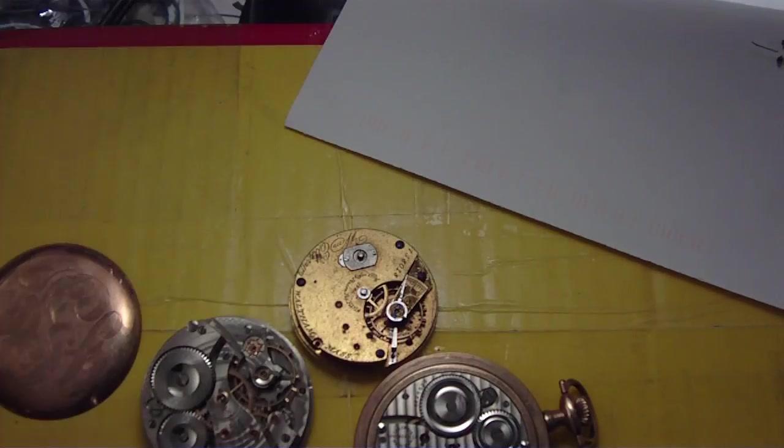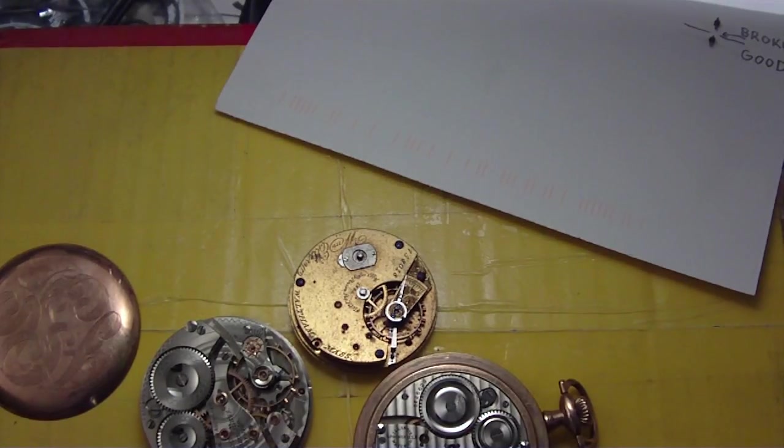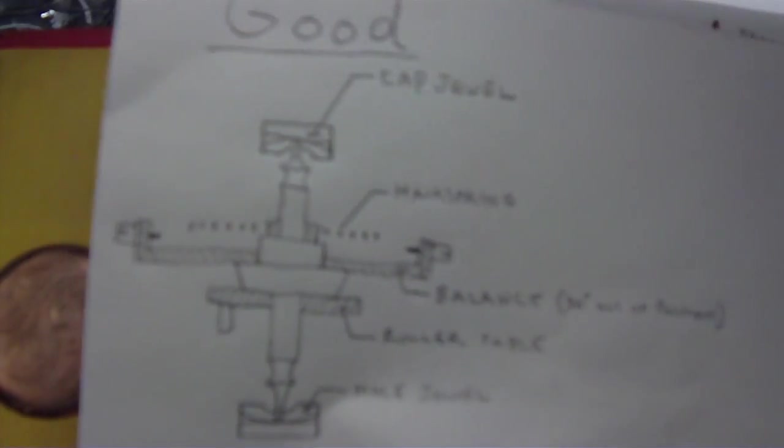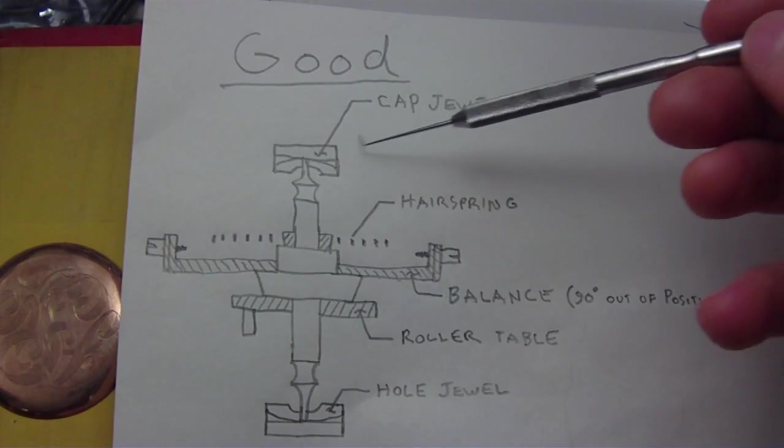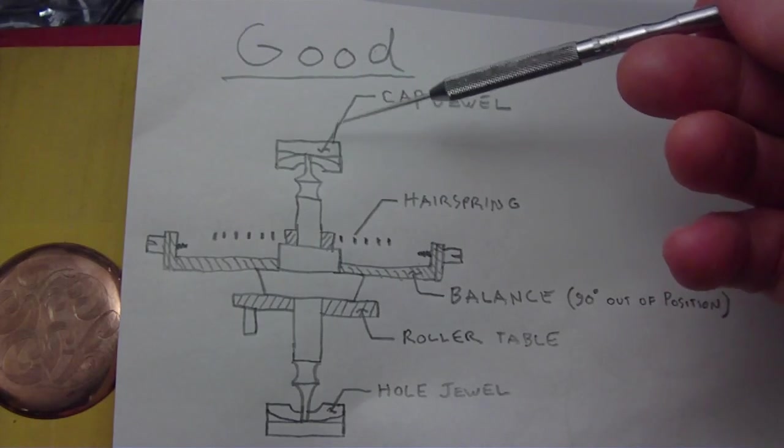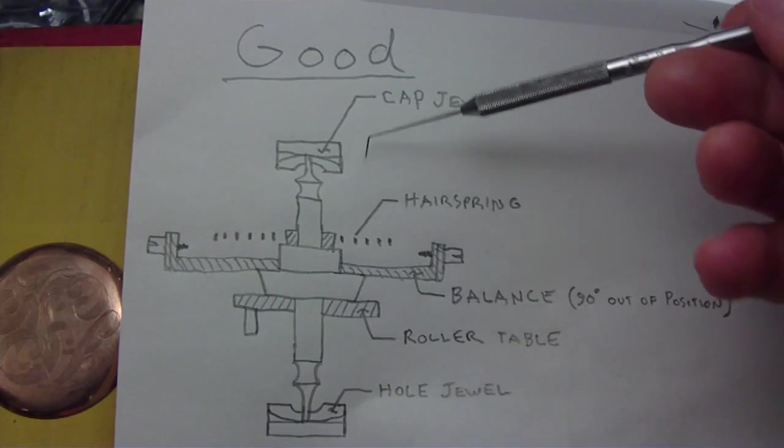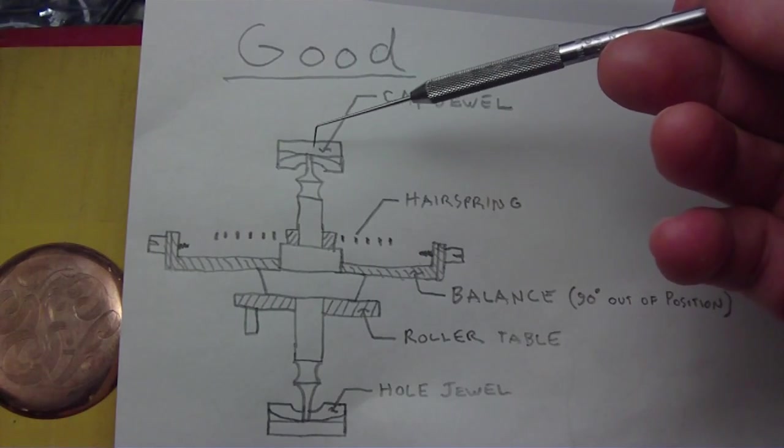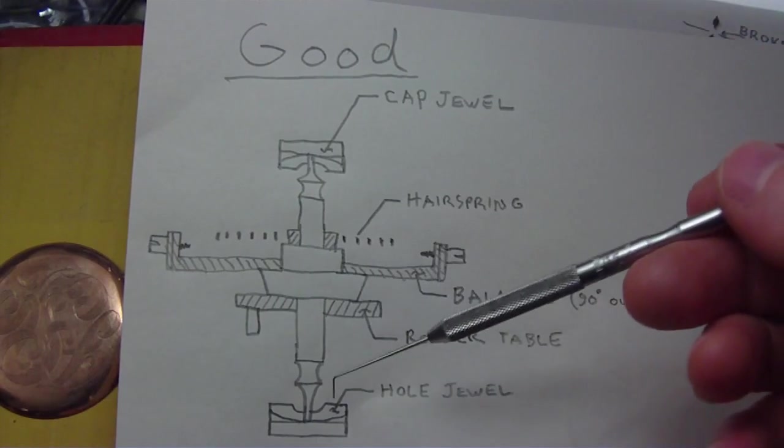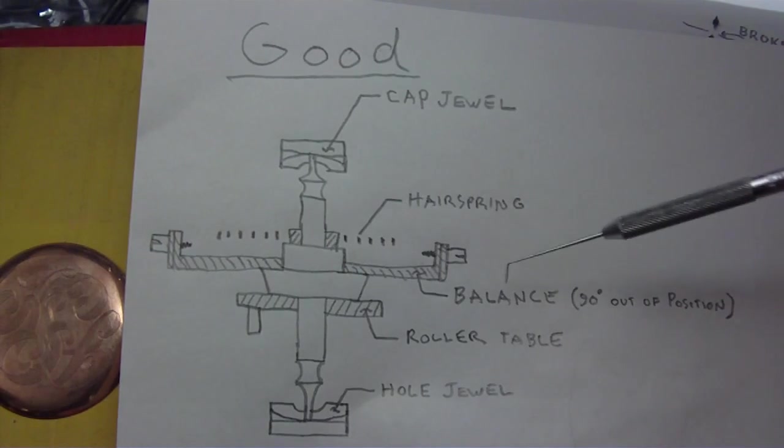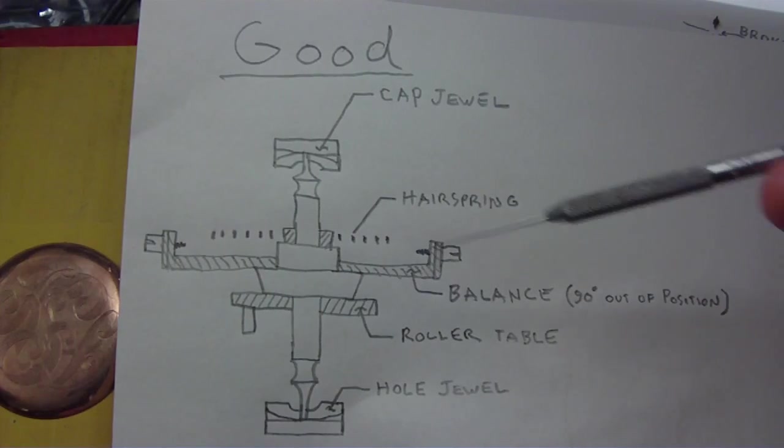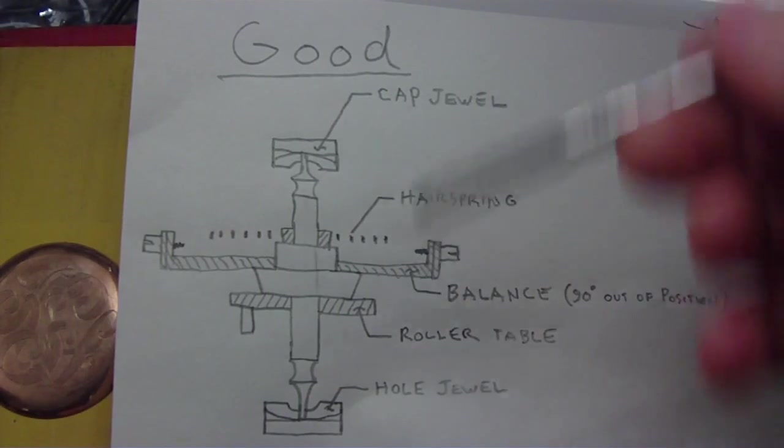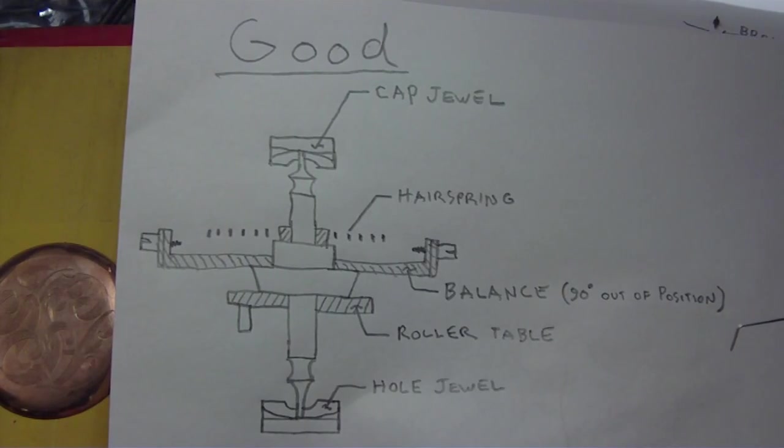This one's a good one. We've got cap jewel up here, hole jewel here. Same thing on both ends. The balance staff is engaged in the hole jewel. You can see both ends. And there's your hair spring and your balance and your roller table. And that's the way it sits. The thing is held in place radially and axially. That's a good balance staff.